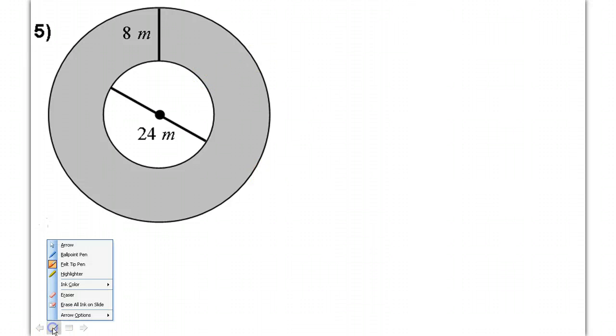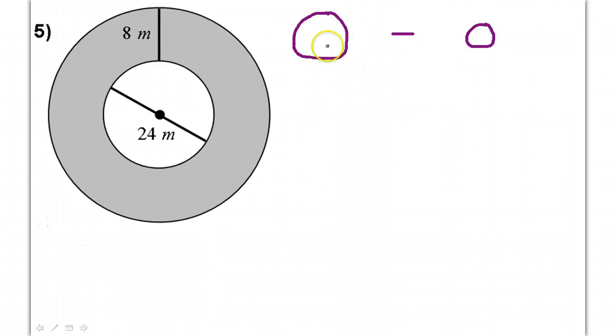All right, we have a shape inside of a shape, so that means to find the shaded area in between we need to subtract. In this case both shapes are circles, just a bigger circle and then a smaller circle, so we will be subtracting the area of the big circle minus the area of the small circle.